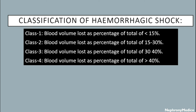Classification of hemorrhagic shock: Class 1 — blood volume lost less than 15%. Class 2 — 15 to 30%. Class 3 — 30 to 40%. Class 4 — more than 40%.